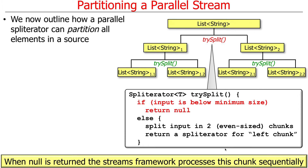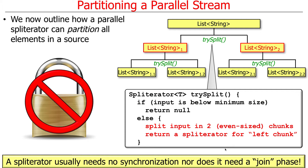The first thing trySplit does is check whether the input is below a minimum size. If it is, it returns null — an indication to the framework that we can't break this up anymore; it's too small. Otherwise, it goes ahead and breaks things into even-sized chunks and then recursively breaks them up again. There's no need for synchronization here because the splitting is done in a single thread of control.